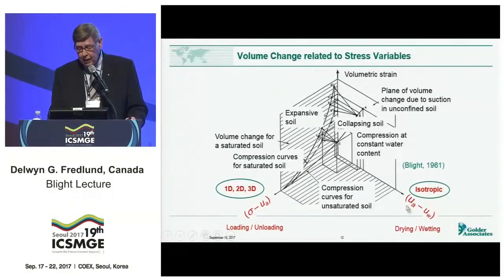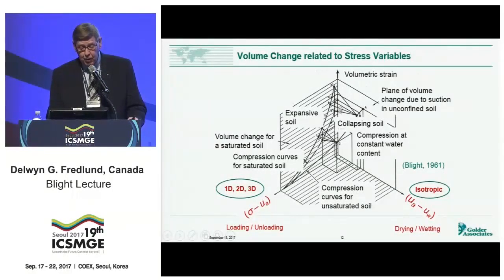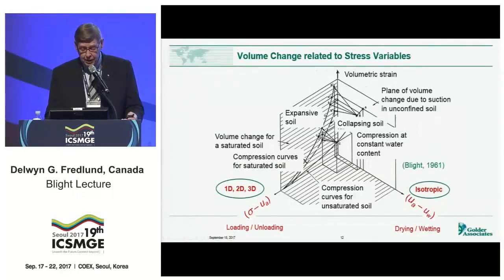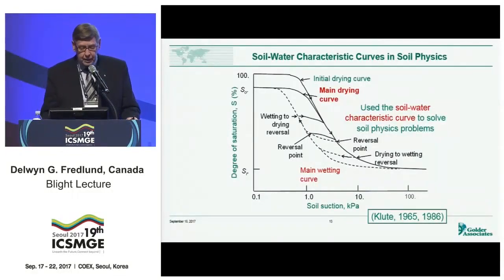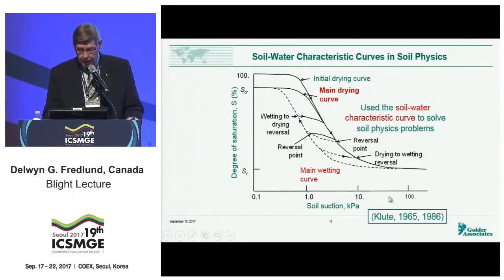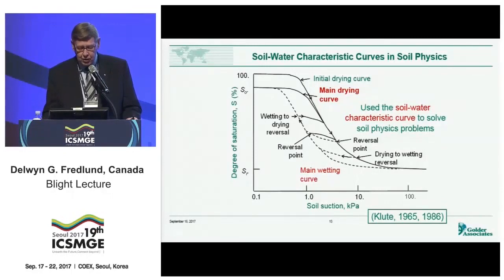Blight's 1961 work tells us first of all how complex volume change problems are. He separated out the effect of suction in the soil from total stress loading. Suction is always isotropic in its nature, while our net total stress could be one-dimensional, two-dimensional, or three-dimensional, and its effect can be independent of suction. Therefore, our two-dimensional relationships became three-dimensional type plots for unsaturated soils. What did soil physics really give us? I go to the summary given by Klute, where he summarizes the essence of the physics for flow through unsaturated soil.